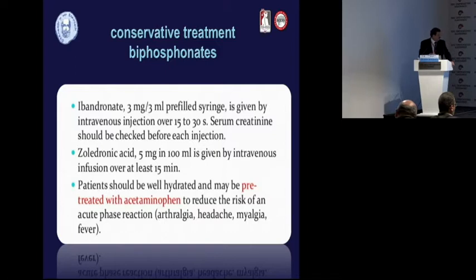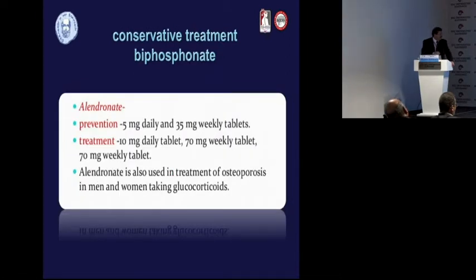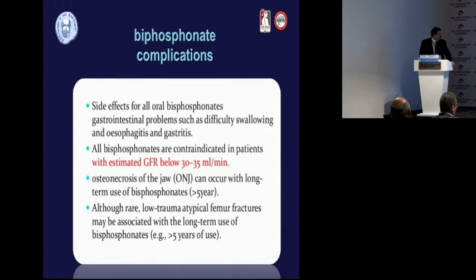Zoledronic acid 5 mg is another intravenous bisphosphonate; patients should be pre-treated with acetaminophen to reduce the risk of an acute-phase reaction. For alendronate in a preventive dose, this is 5 mg per day. All of these medications have side effects and potential problems.